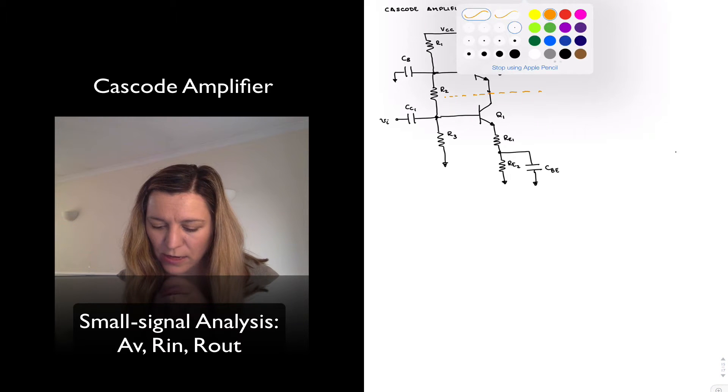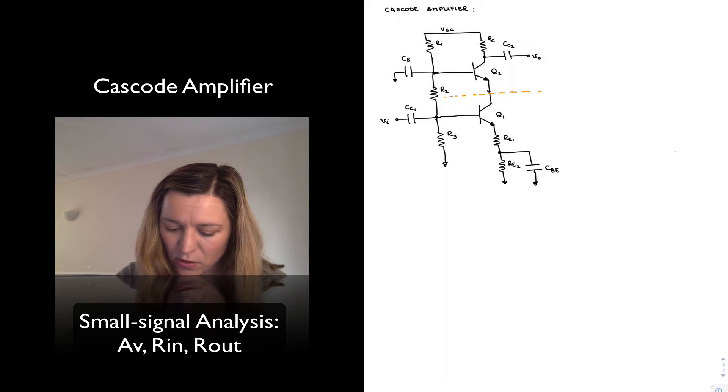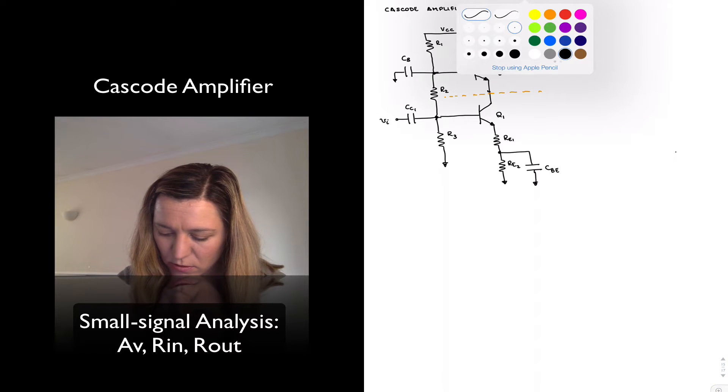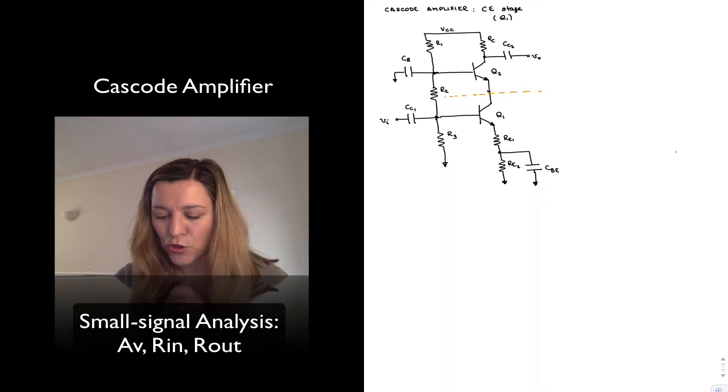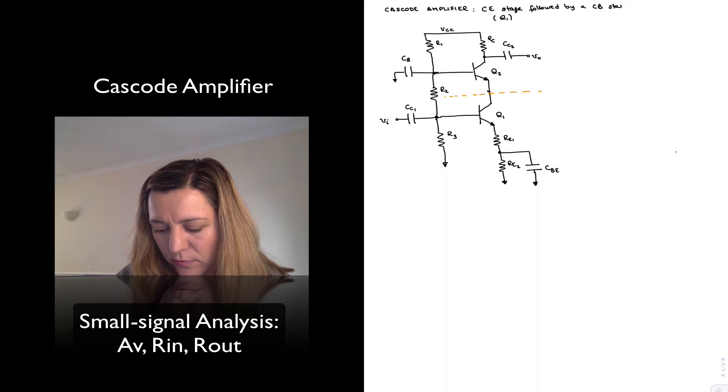And so we will have a common emitter stage, I'm just going to call it the CE stage, formed by transistor Q1, followed by a common base stage formed by transistor Q2.